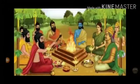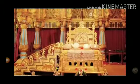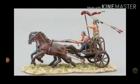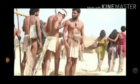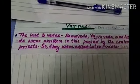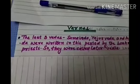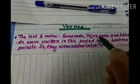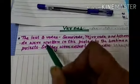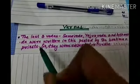As the Raja is the central figure, he is performing Yagya. The next picture shows the Ashwamedha Yag being performed. You can see the throne of the Raja — the Rajagaddi. Another picture shows the charioteer with the Raja. Another shows the Vish or Vaishya — the common people. And this picture shows the Shudra, the lower caste people. Now the last three Vedas — Samaveda, Yajurveda and Atharvaveda — were written in this period by the Brahman priests.